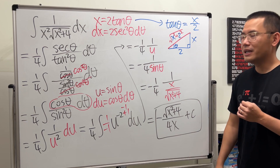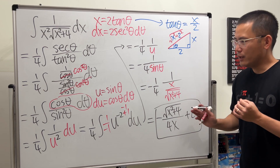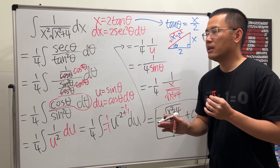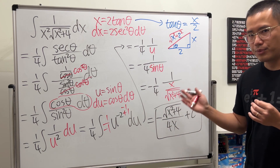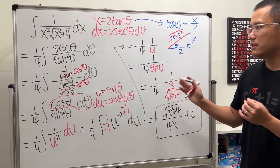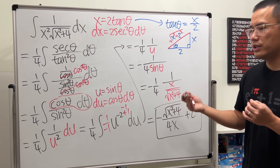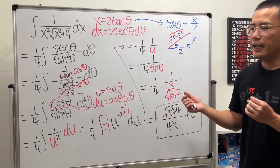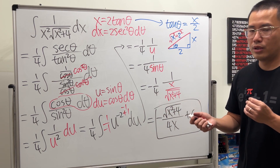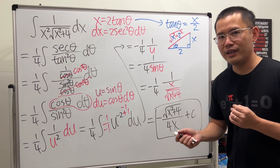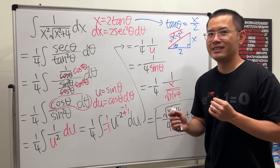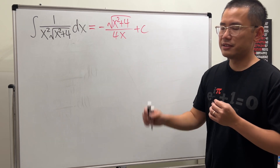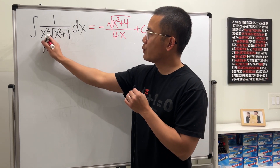Finally, add plus c. So the complete answer is negative (square root of x squared plus 4) divided by (4x), plus c. I know it involves a lot of steps but it's great practice for understanding difficult integrals. Now let's look at the easier bonus method — it's not obvious at first, but check this out.